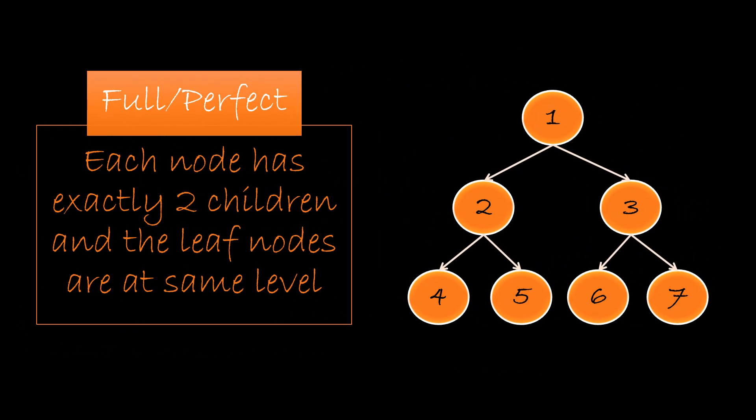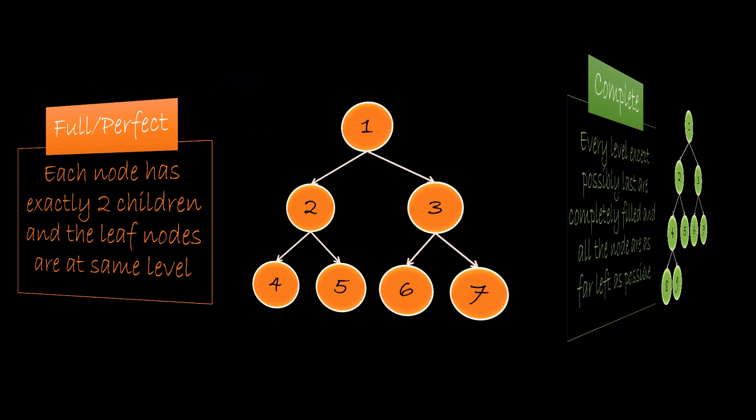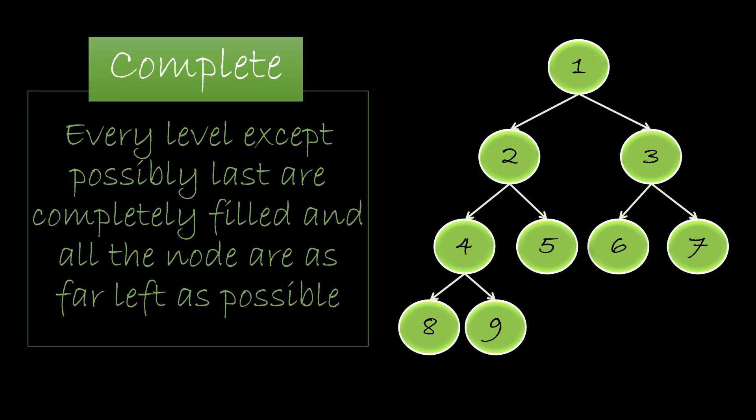In a full or perfect binary tree, each node has exactly two children and the leaf nodes are at the same level. These are fully or completely filled trees. In a complete binary tree, every level except possibly the last one is completely filled, and all the nodes in the last level are as far left as possible. If we see the levels except the last one, it represents a perfect binary tree, and on the last level, the nodes are filled from left to right, so the nodes are far left on the last level.